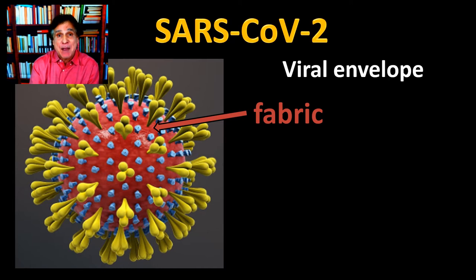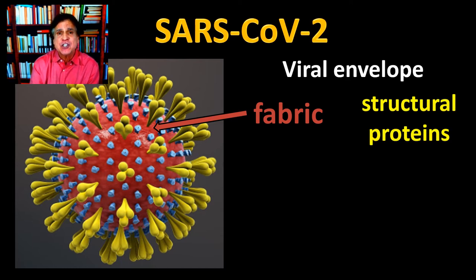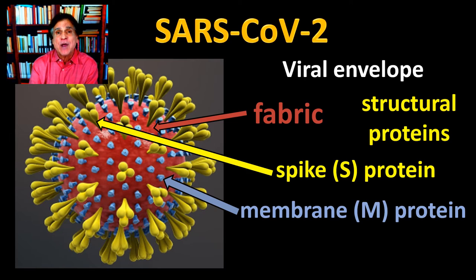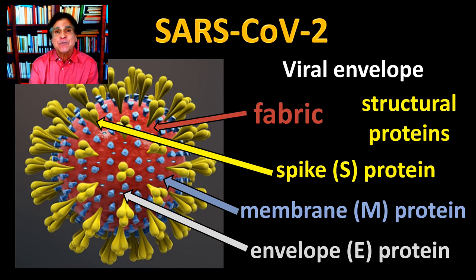In addition to the lipid fabric, the viral envelope also contains structural proteins. The largest is called the S or spike protein, which extends from the surface of the envelope. The spike protein has a role in infecting host cells and may be the target of vaccination therapies. We also have the M or membrane/matrix protein, embedded in the lipid layer, which gives it a firm structure resulting in the near-spherical shape of the virion. We also have the E or envelope protein, responsible for allowing ions — charged atoms — into the interior of the virus particle, and it may also have a role in replication.